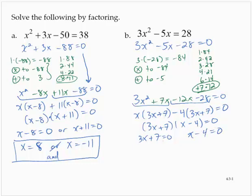To solve the first equation, 3x plus 7 is 0, I would subtract 7, 3x is negative 7 and divide by 3, x is negative 7 thirds. The second equation, I would add 4, so x is equal to 4.